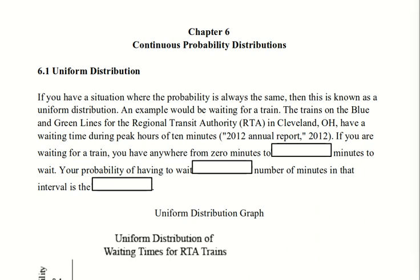If you have a situation where the probability is always the same, then this is known as a uniform distribution. An example would be waiting for a train. The trains on the blue and green lines for the RTA in Cleveland, Ohio, have a waiting time during the peak period of 10 minutes. A train comes through every 10 minutes.